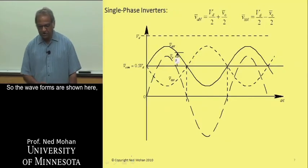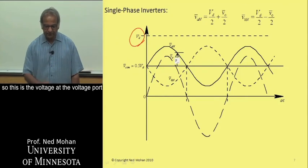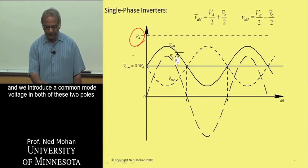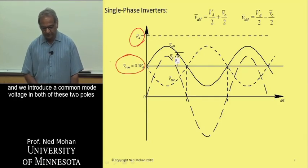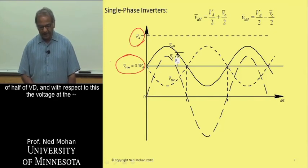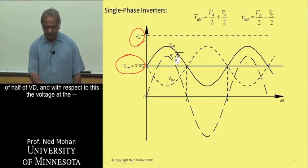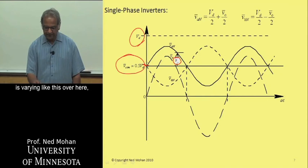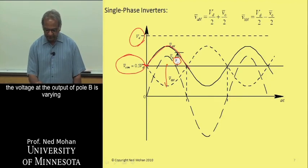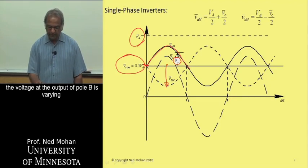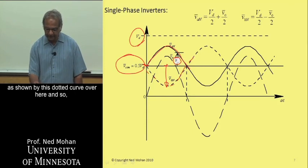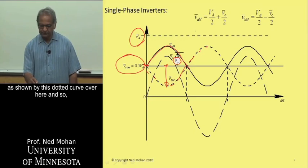So the waveforms are shown here. This is the voltage at the voltage port, and we introduce a common mode voltage in both of these two poles of half of Vd. And with respect to this, the voltage at the output of pole A is varying like this over here. And similarly, with respect to this, the voltage at the output of pole B is varying as shown by this dotted curve over here.